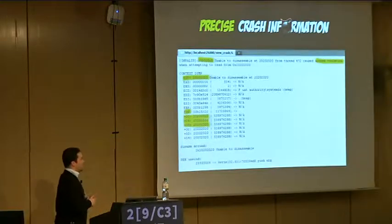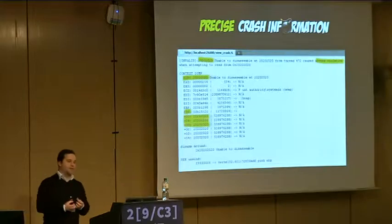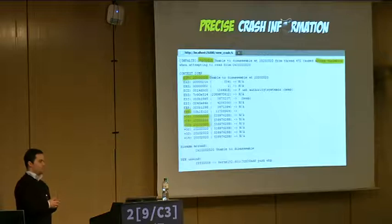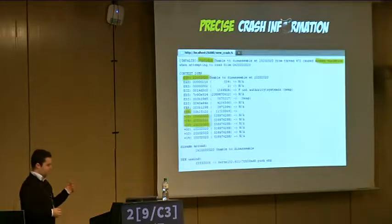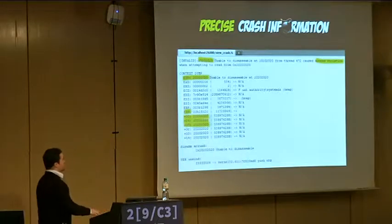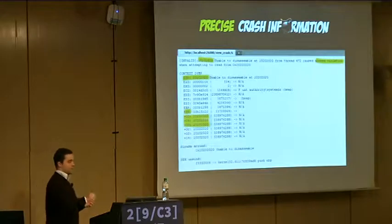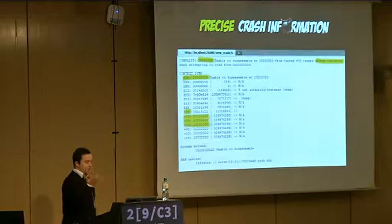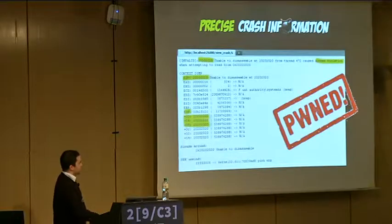You get as much information as you can from the state of the server at the time of the crash. In this example, it's pretty easy to see that you can control some important CPU register values. So it's pretty easy to see that you can build an exploit using this crash — you owned the server.